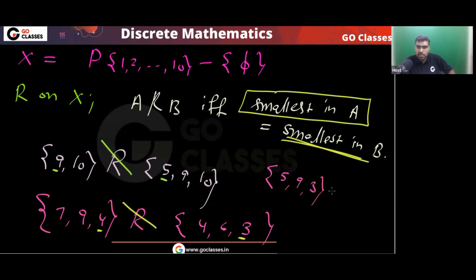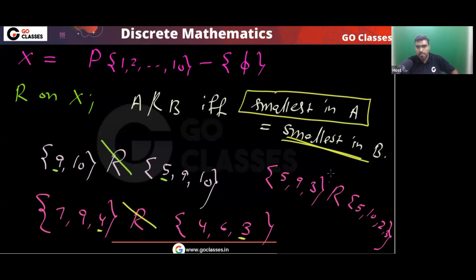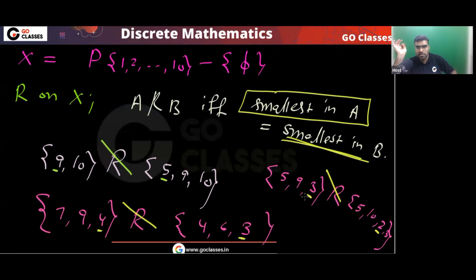One more example: is {5,9,3} related to {5,10,2,3}? Again, no. Here the smallest is 3, and here the smallest is 2. They are not equal, so they are not related.